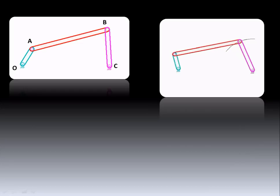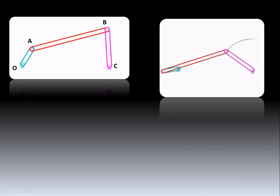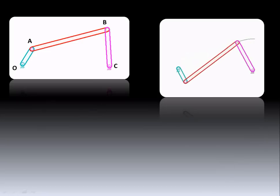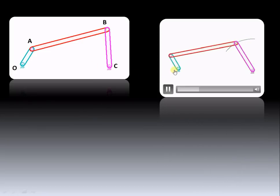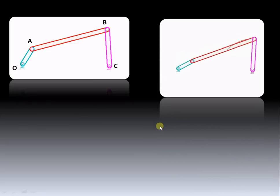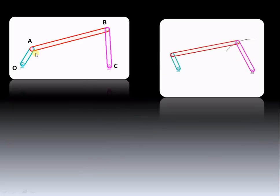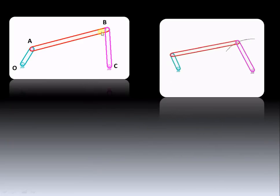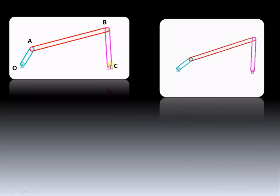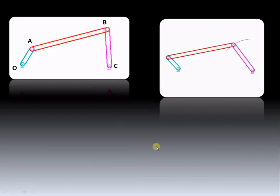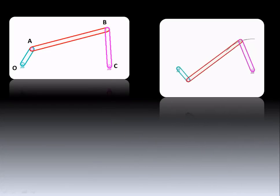Let us try to understand how to draw the velocity diagram for a simple four-bar mechanism as shown. OA is a crank which is rotating as shown in the animation. AB is the intermediate link or coupler link, and BC is the output link. The path traced by this output link is also shown.